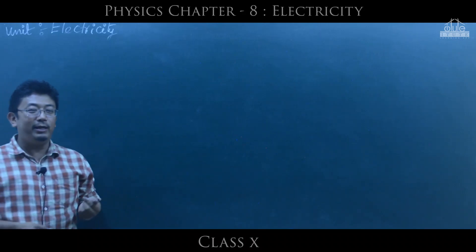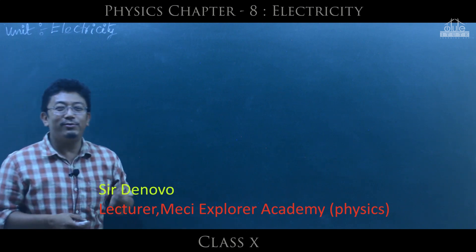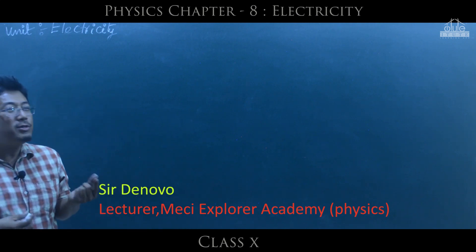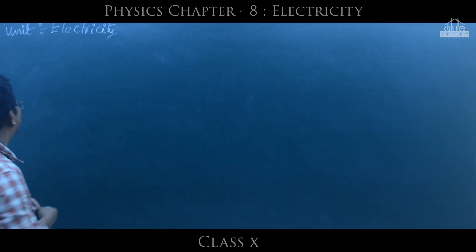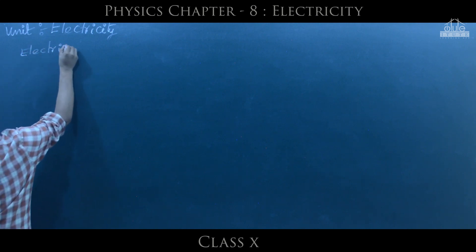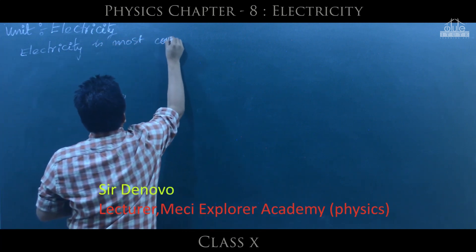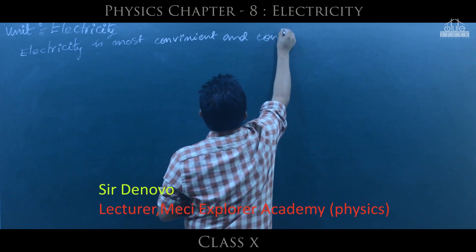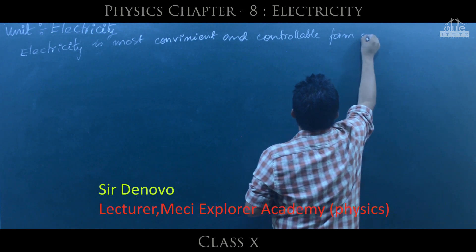In class 3, we are going to talk about electricity in this chapter. This is an interesting unit. First, electricity is there — this is a very simple definition. Number 1: electricity is the most convenient and controllable form of energy.